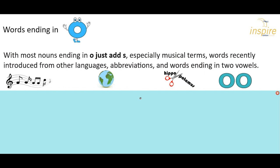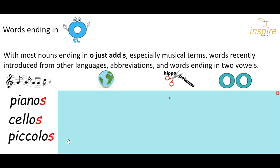And now the rule for words ending in O. This is a little bit trickier, but if you remember this, it will help you. With most nouns ending in O, you just add an S, especially if they're musical terms, or words recently introduced from other languages, or abbreviations — words that have been shortened — like hippo, or words ending in two vowels. So in the musical terms, we have piano, cello, piccolo — we just add an S to those.